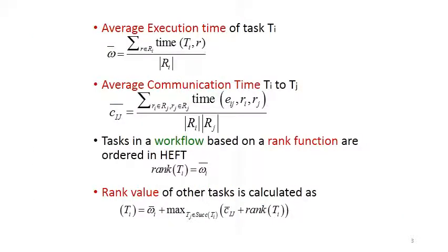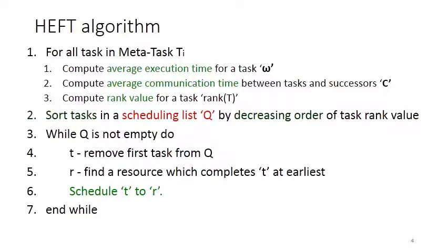The HEFT algorithm first computes the average execution time of each task, then it computes the average communication time between one task and another, and then a rank is assigned to each task. Based on the rank value, the task is allocated to the corresponding resources. The HEFT algorithm has two parts: in the first part we calculate execution time, communication time, and the rank of each task; in the next part we schedule the task to the corresponding resources based on rank value.